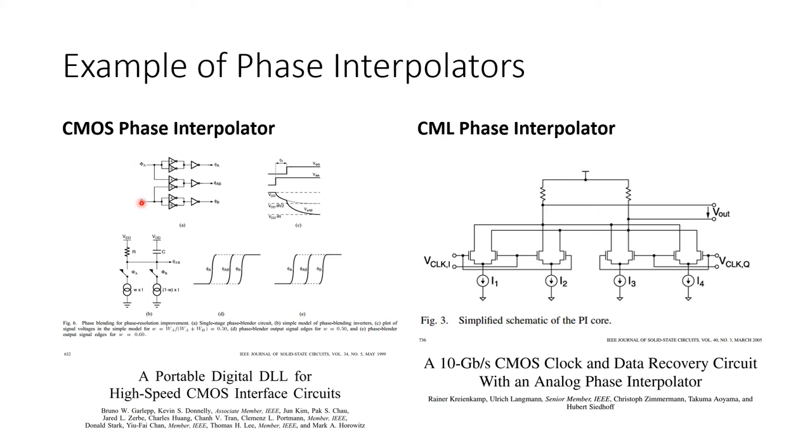But this middle path is being driven by two inverters switching at slightly different times. One switches with the edges of the input PHI A, the other switches with the edges of the other input PHI B. So you get a waveform at this node here that looks something like this,